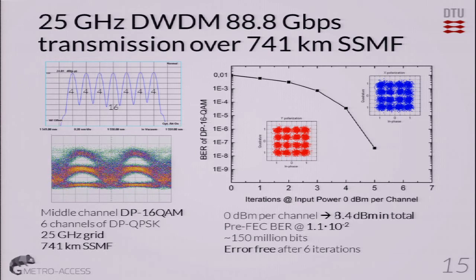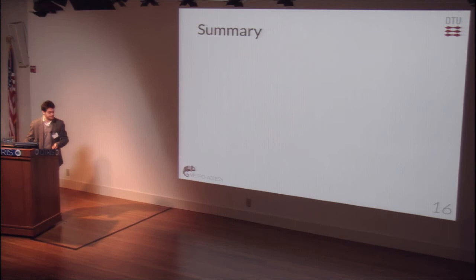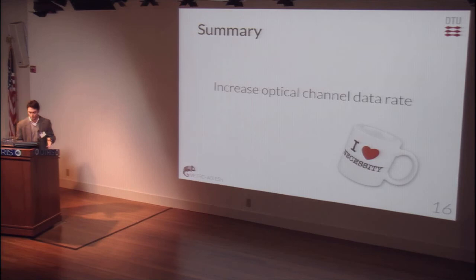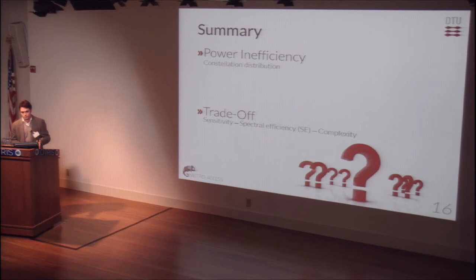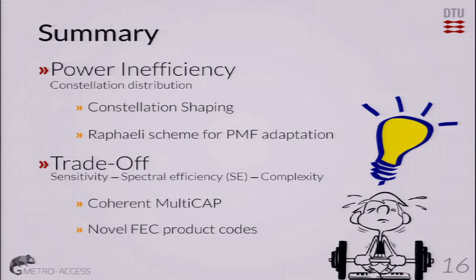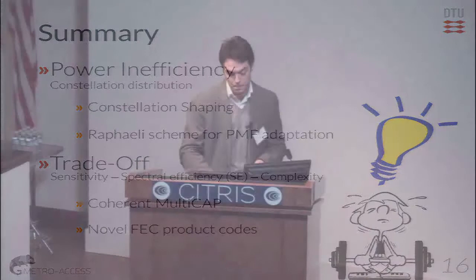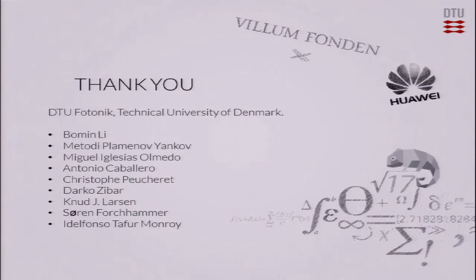We just wanted to give you some alternatives to keep on pushing the limits as we are doing. With this, I would like to summarize my talk. We gave a necessity: we need to cope with demand, and we propose to increase optical channel rates. We identified problems out of this — power inefficiency of constellations and modulation formats used so far, and the trade-off between sensitivity, spectral efficiency, and complexity. We came with alternatives consisting of constellation shaping through probabilistic and geometric shaping, and concerning the trade-off, we proposed Multicap combined with strong, novel, and promising forward error correction codes. I would like to thank the technical contributors and foundations for all this work. Thank you very much.